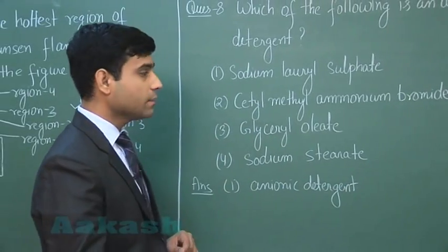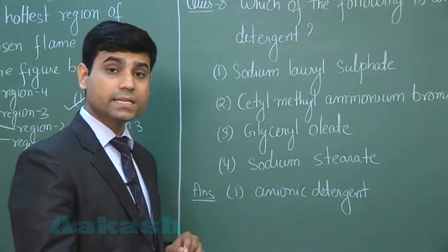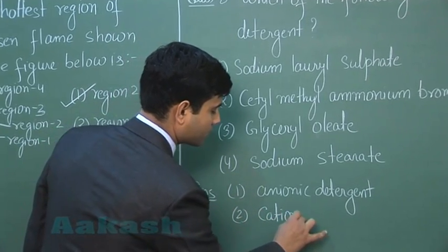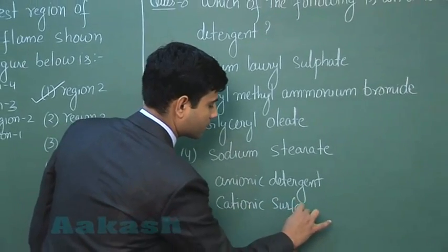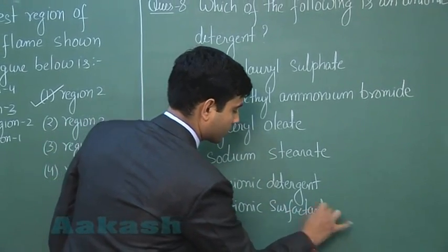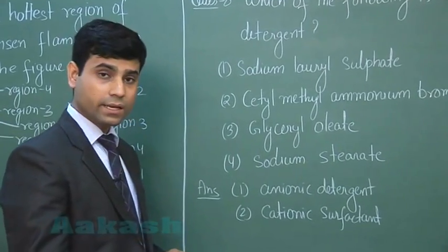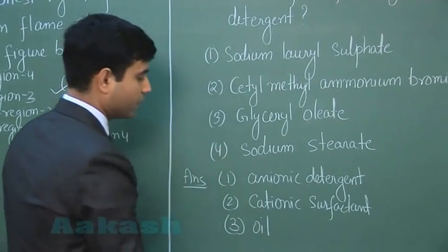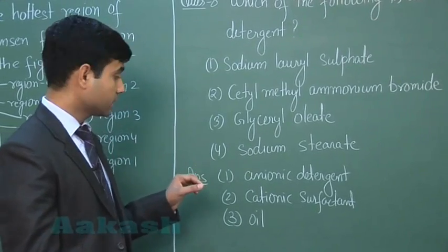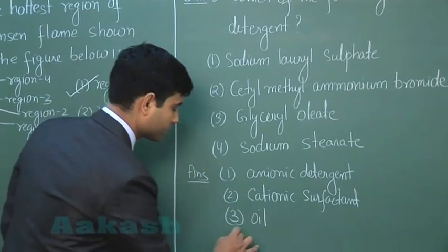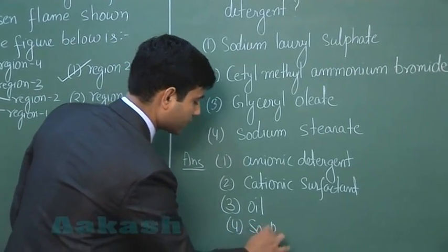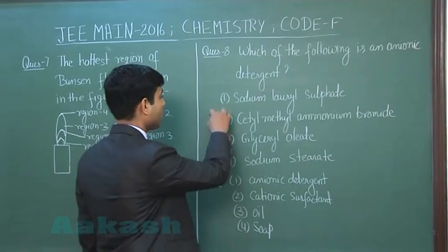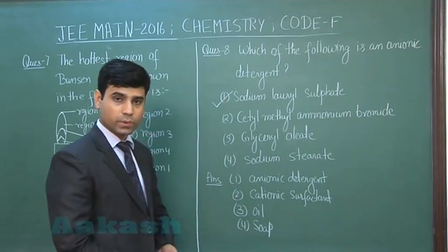The second option, cetyl methyl ammonium bromide, is a cationic surfactant. The third option, glyceryl oleate, is an oil, and the fourth option, sodium stearate, is a soap. So the question asks which one is the anionic detergent, and the correct answer is option number 1.